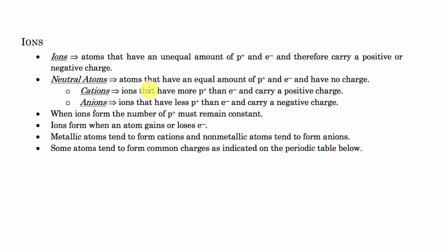If the atom has more protons than electrons, it will carry a positive charge — we call those cations. And if we have more electrons than protons, then the atom is going to carry a negative charge. If you have three electrons and two protons, you're going to get a negative charge. These are called anions.